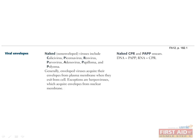There are seven naked viruses. Three are RNA viruses: the calicivirus, picornavirus, and reovirus. Four are DNA viruses: parvovirus, adenovirus, papillomavirus, and polyomavirus.